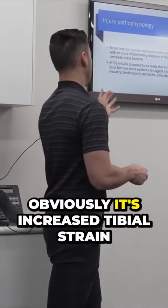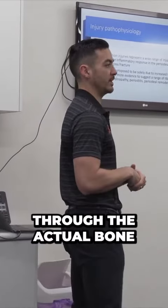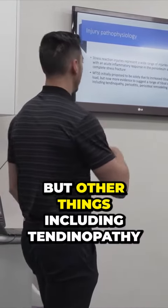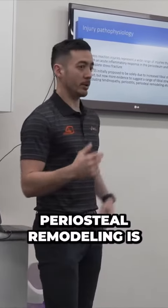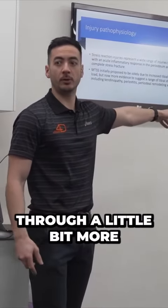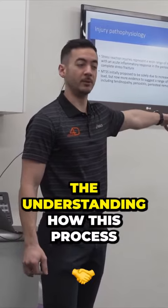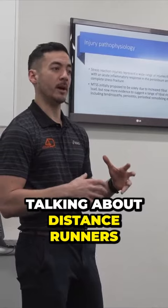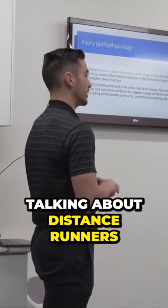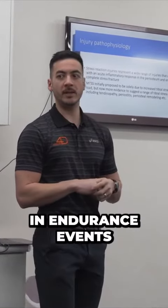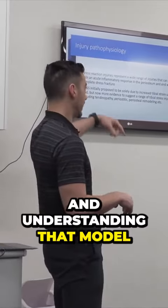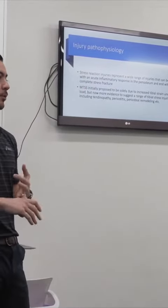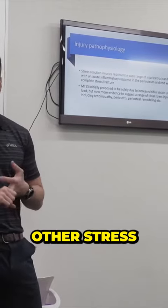Other things to consider include increased tibial strain through the actual bone, tendinopathy, and periosteal remodeling — which I'm going to go through in a bit more depth. Understanding how this process works and how it can affect people, particularly distance runners and those competing in endurance events, is important. That model can be affected by things like diet, hormones, and other stressors.